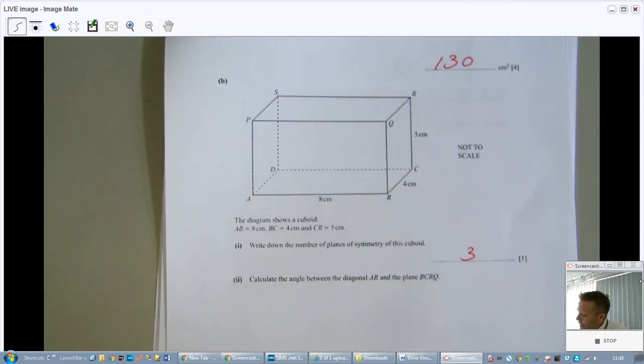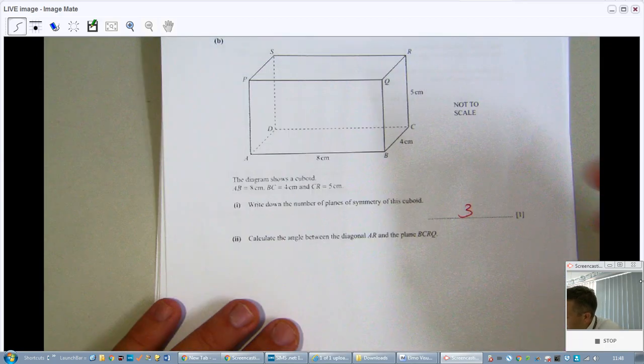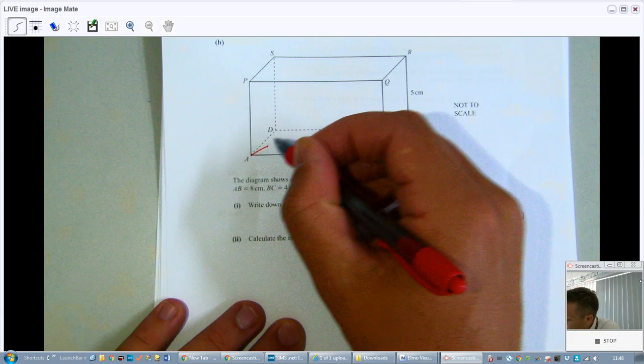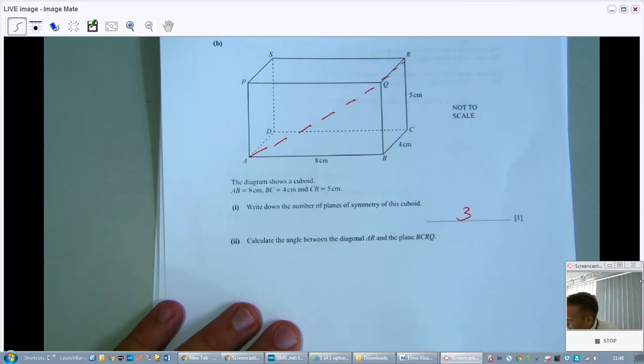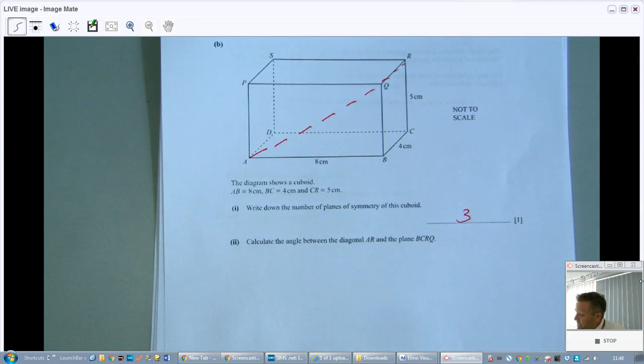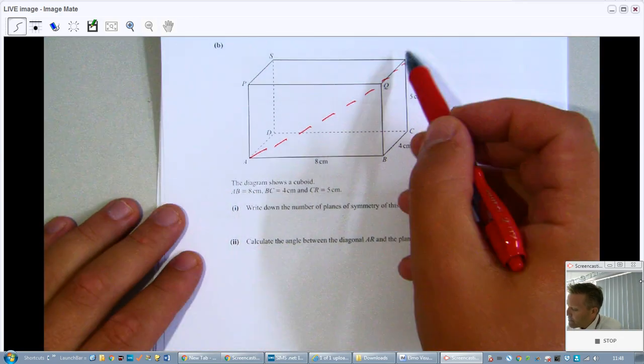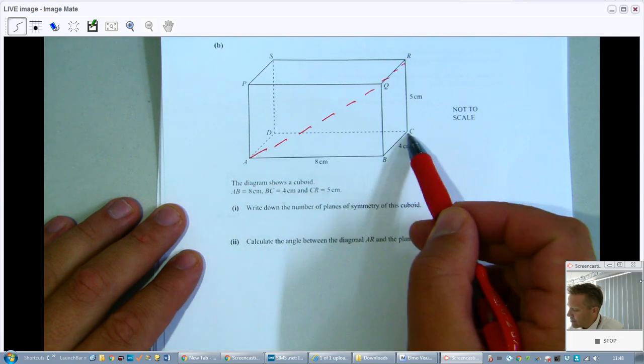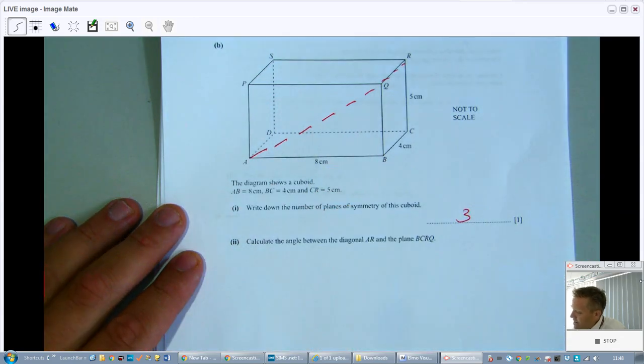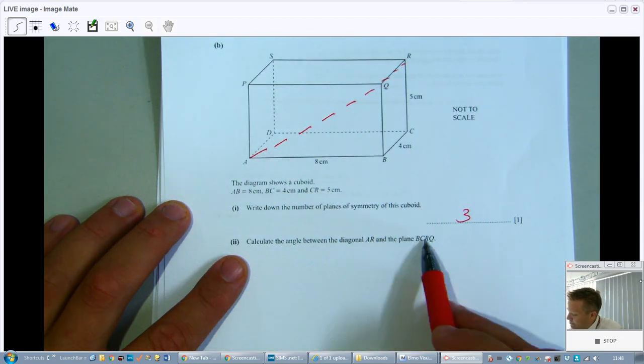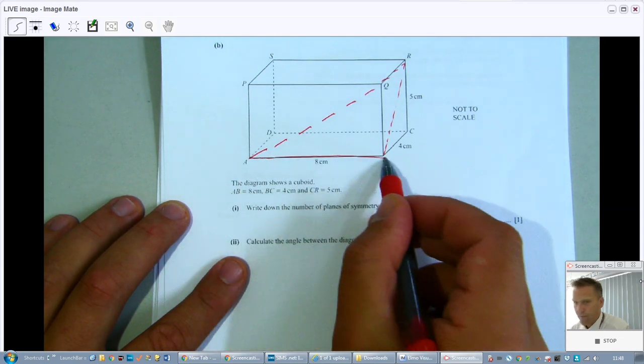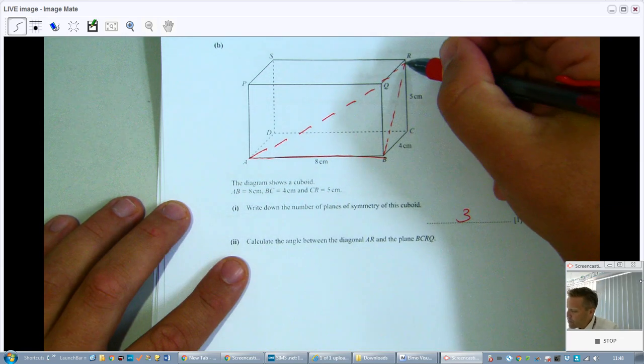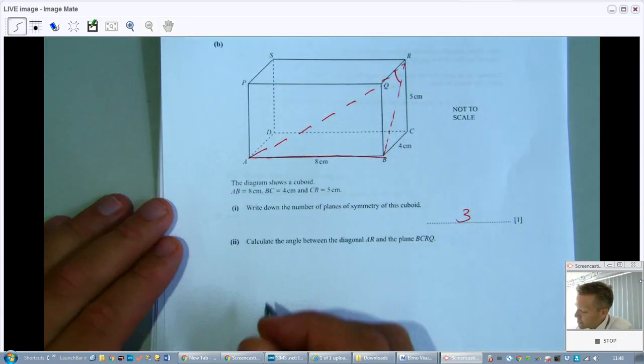Calculate the angle between the diagonal AR. Now this is the question I would expect, that diagonal through the body. Let me just draw that one, AR. The angle between AR and plane BCRQ. That is interesting because usually they will ask for the angle between that diagonal and the base, but now they're asking the angle between this diagonal and BCRQ, so this plane. Make sure that you look at this triangle, that is the right angle triangle to look at. You go for that diagonal and this is the angle that you're looking for.